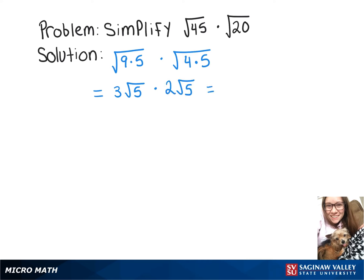And then that'll turn into 3 times 2, and then since we have the square root 5 times square root of 5, that's just 5. Then that gives us our final answer, which is 30.